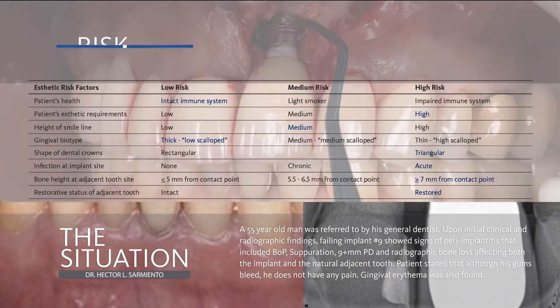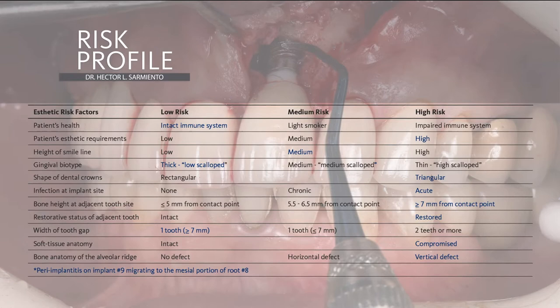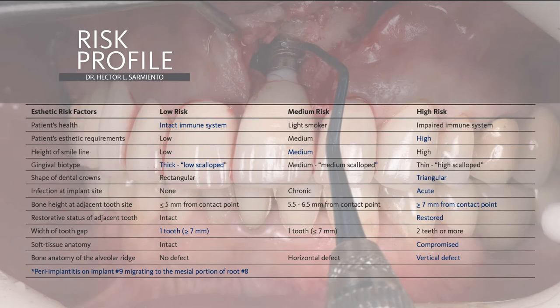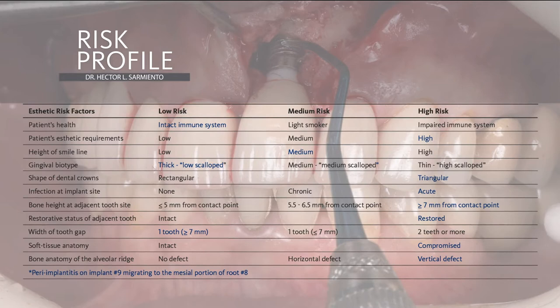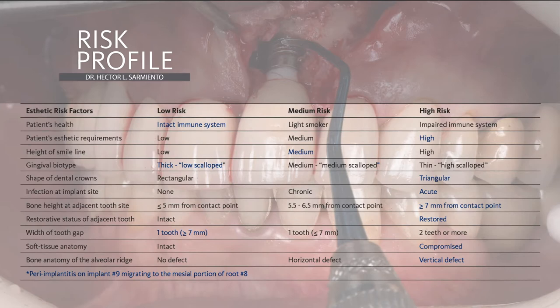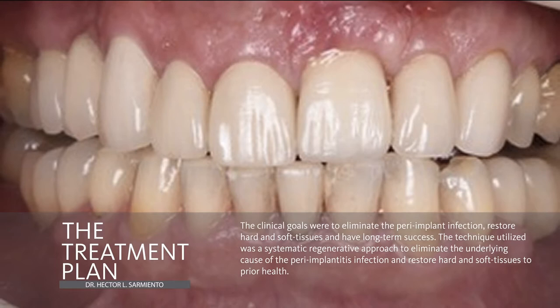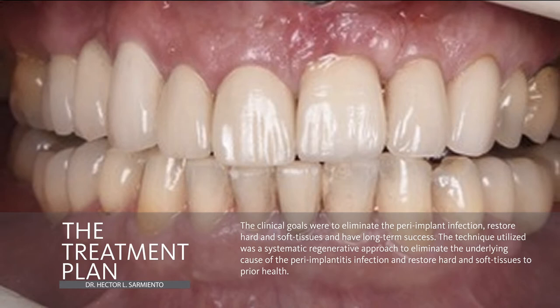The patient also had meticulous home care. Prior to showing you how we treat our patient, I want to point out that the patient has no medical concerns that could be of any contraindication to performing any type of oral surgery. The anatomy of the alveolar ridge presents itself with a huge vertical defect, not only on implant number 9, but it also extends on the mesial of tooth number 8.